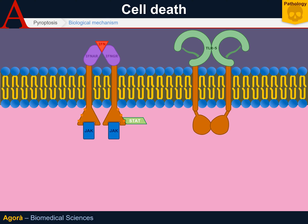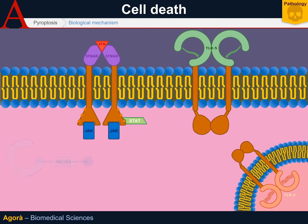Pyroptosis is activated by the interferon-alpha and interferon-beta receptors, and by a particular toll-like receptor — the fifth — which is capable of binding flagellin, a molecule in the flagellum of some bacteria. Toll-like receptor 3 and an NOD intracytoplasmic receptor are also capable of activating this type of cell death. NOD is a receptor present in the cytoplasm of most cells and is capable of identifying the components of bacterial walls.